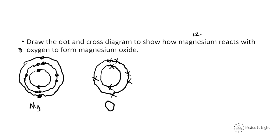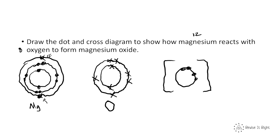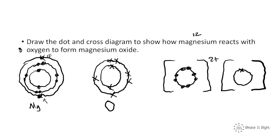When these ionically bond, magnesium is going to give its 2 outer electrons to oxygen. We draw magnesium as an ion — just its outer shell, which now has 8 electrons. Because it has lost 2 electrons, it now has a 2+ charge.